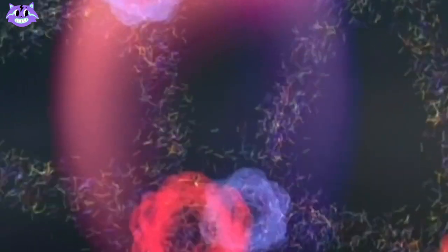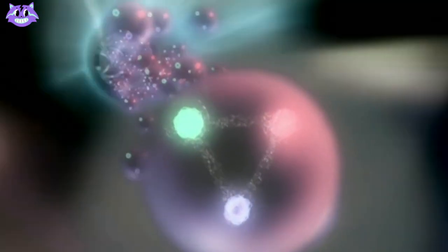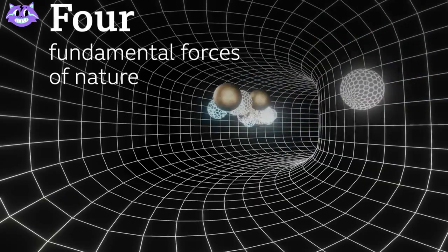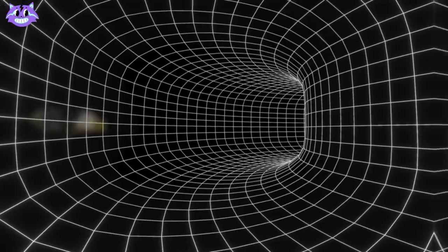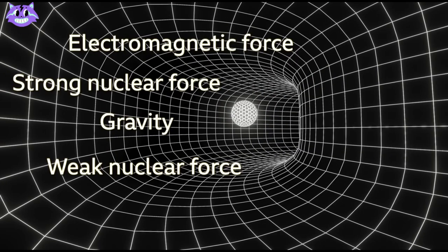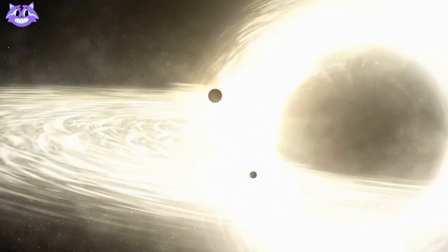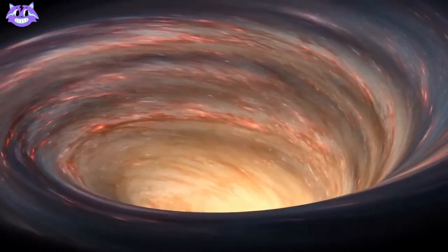The standard model of particle physics is the best explanation we have for how the universe works at the smallest level. It describes four fundamental forces: gravity, electromagnetism, the strong force, and the weak force. These four forces govern how all the objects and particles in the universe interact with each other.